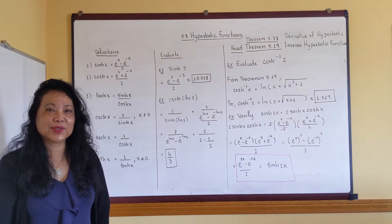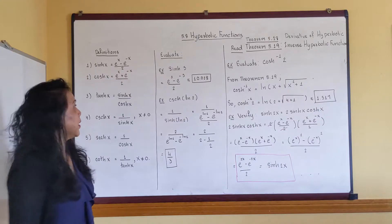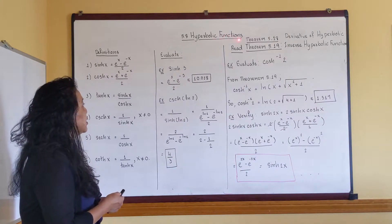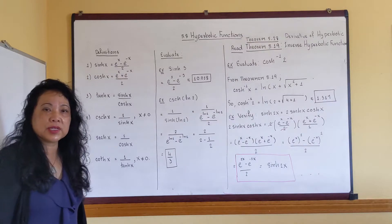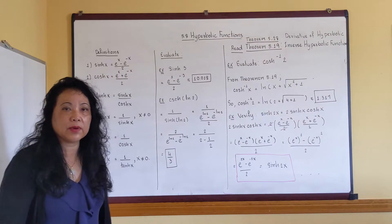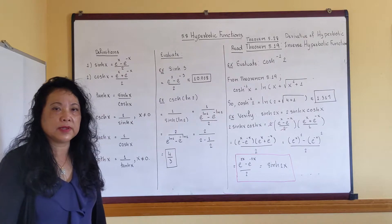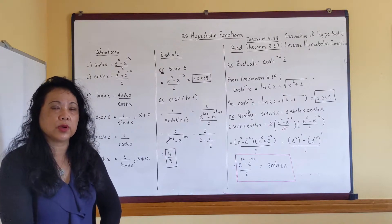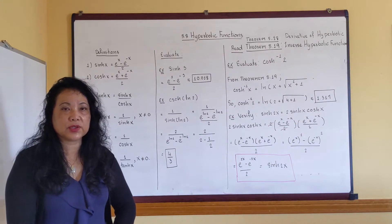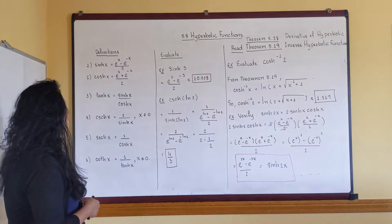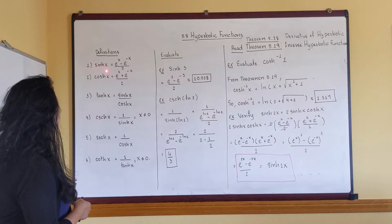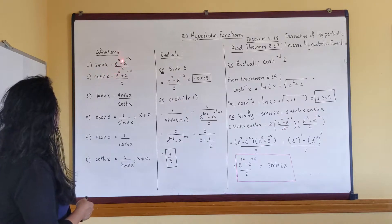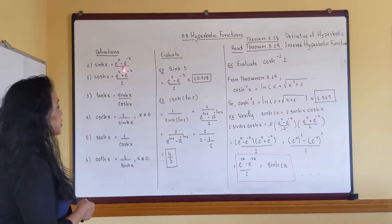Hi everyone, let's go to our last section, 5.8 Hyperbolic Functions. In this section there's a lot of definition and theorem, and the problem is very straightforward. I would strongly recommend you read the definition and theorem. First definitions: hyperbolic sine is equal to e to the x minus e to the minus x over 2.